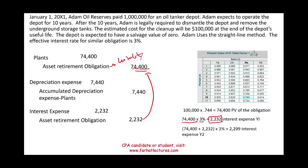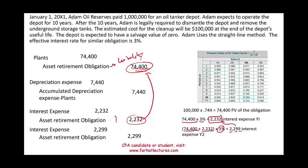For year two, I compute interest expense by taking the book value from year one plus what was added in year one, multiplied by 3%. The interest expense for year two is $2,299 — greater than year one because the obligation went up. The asset retirement obligation was $74,400, plus $2,232 added in year one. For year three I do the same: original obligation plus year one plus year two additions, times 3%, and interest expense should be higher than year two. Each year: debit interest expense, credit asset retirement obligation.